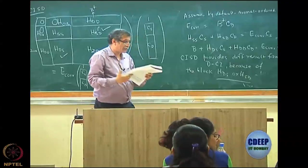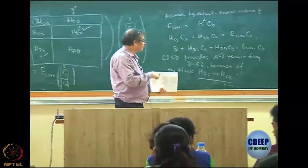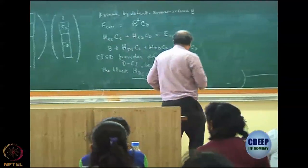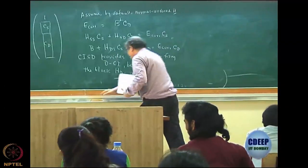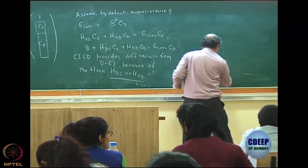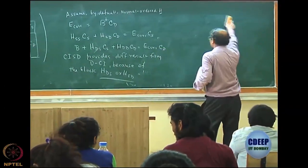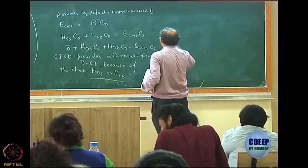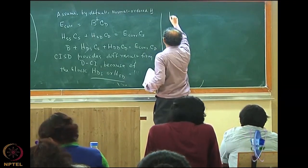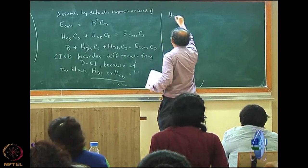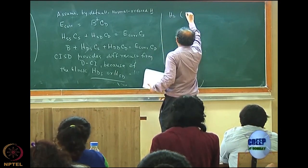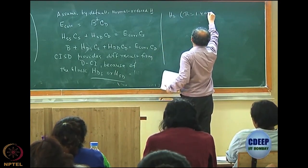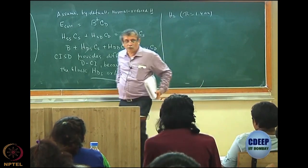A very good example is of course hydrogen. This is basically a calculation of the H2 molecule at 1.4 atomic units, which is of course the experimental bond distance.